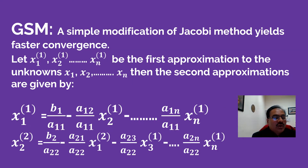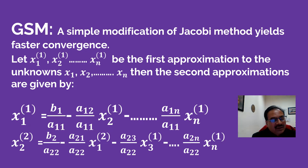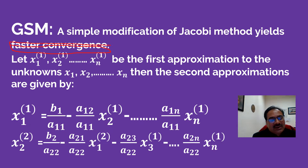The Gauss-Seidel method is a simple modification of Jacobi's method that yields faster convergence. We will study this iterative method to solve the linear system of equations. Among all iterative methods, Gauss-Seidel gives the fastest convergence.